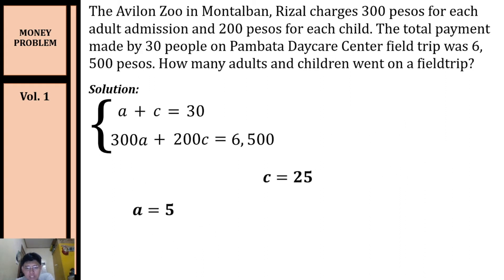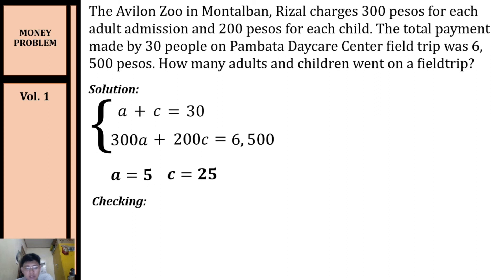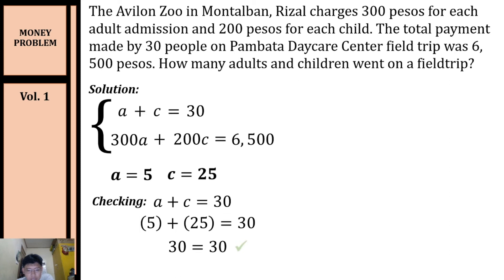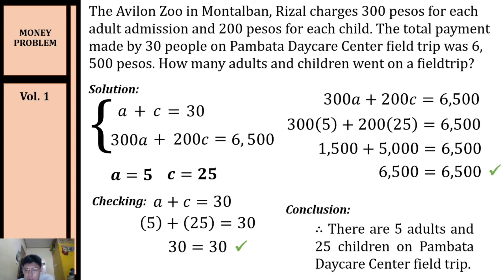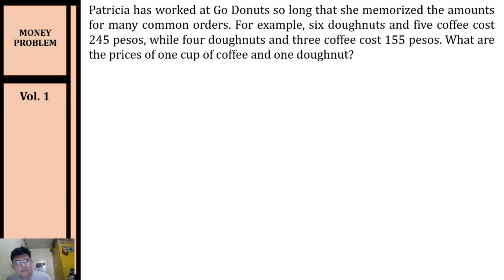Let's check our solution by substituting the values of a and c into both equations. For the first equation: 5 + 25 = 30 — yes, it satisfies. For the second equation: 300(5) + 200(25) = 1500 + 5000 = 6500 — yes, it satisfies. Therefore, there are 5 adults and 25 children on the Pambata Daycare Center field trip.